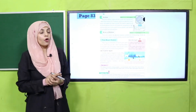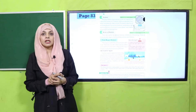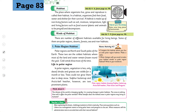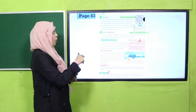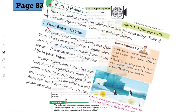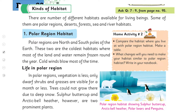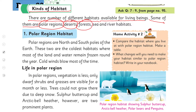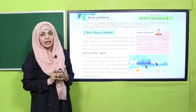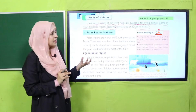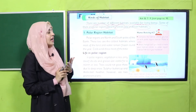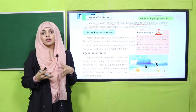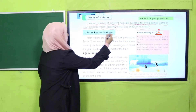My dear students, now open your reading page given on page number 83. I hope everybody has opened page number 83. Hum habitat ko define already kar chuke hain. Now we will discuss about kinds of habitat. There are a number of different habitats available for living beings. Some of them are polar regions, deserts, forests, sea and river habitats. Yeh sab alag alag habitats hain jahan different plants aur animals rehte hain. Today we will discuss about polar region habitat. Quickly read it with me.